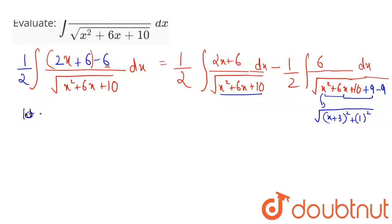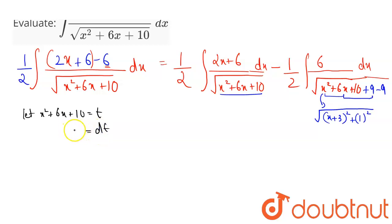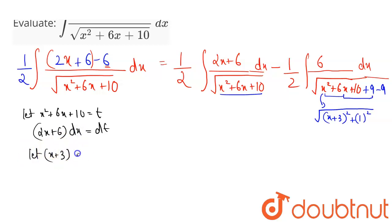Let x squared plus 6x plus 10 equal t. Differentiating both sides with respect to x, we get dt equals (2x + 6) dx. Similarly, let x plus 3 equal u. Differentiating both sides gives dx equals du.